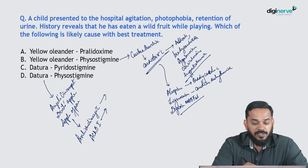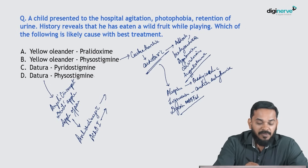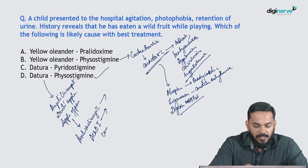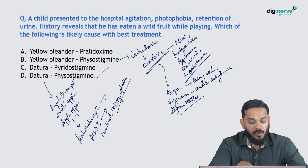Among pyridostigmine and physostigmine, physostigmine crosses the blood-brain barrier and is used to counteract the central nervous system symptoms of datura poisoning. So the correct option is option D.